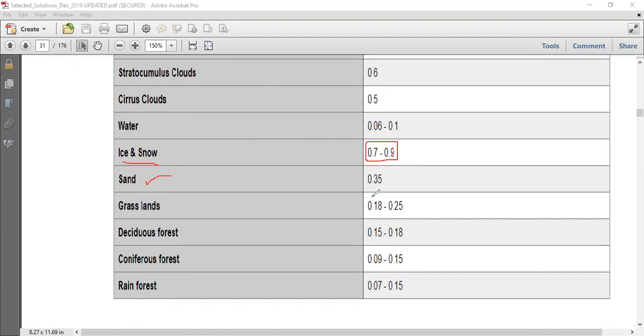We have sand which is 0.35, grasslands 0.18 to 0.25, deciduous forest 0.15 to 0.18, coniferous forest having an albedo percentage reflectance 0.09 to 0.15, then rain forest around 0.07 to 0.15. One should remember these values because they could ask one question from this.